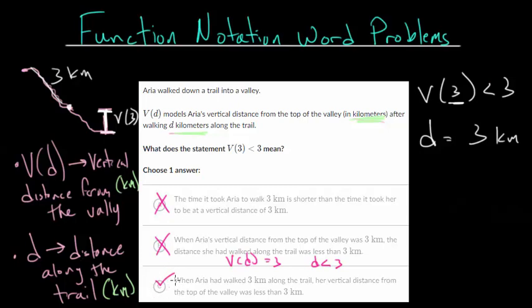And in general, these problems can be very tricky. But if you follow this strategy of first figuring out what do the letters represent, what does the function represent, and what does the independent variable, D in this case, represent. And like I mentioned, it does help to have the units. Since, for instance, this choice letter A, they start talking about time, but we know that our function and the input to our function D only are concerned with distance, whether it's vertical distance or distance along a trail.